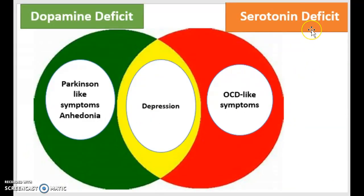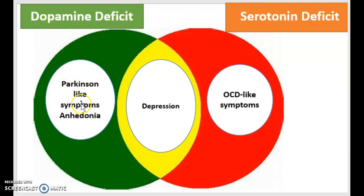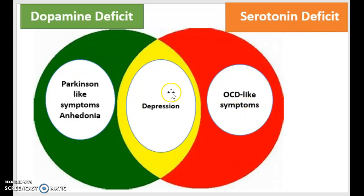This chart covering dopamine and serotonin deficit levels is pretty useful to keep on hand. When there is a dopamine deficit, you will find Parkinson-like symptoms or anhedonia. If there is a serotonin deficit, you will find OCD-like symptoms. Depression can come from either a dopamine deficit or a serotonin deficit, so that is important to keep in mind.